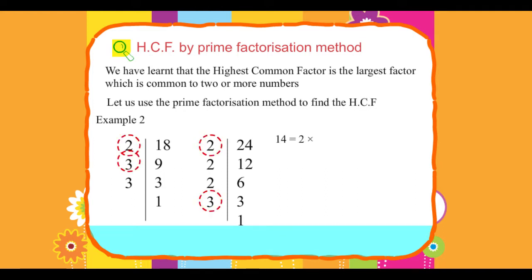18 = 2 × 3 × 3, and 24 = 2 × 2 × 2 × 3. The common factors are 2 and 3.